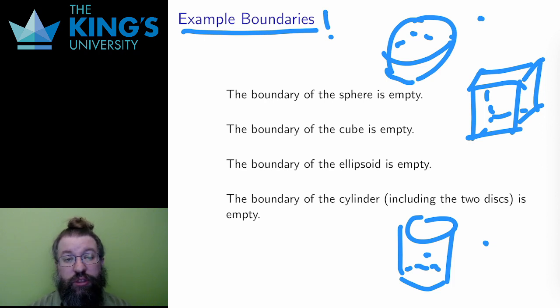If a surface is closed, it has no boundary. There is no edge to the sphere. It just keeps going around. The cube has sharp corners and sharp edges, but it has no edge where it just stops. It only has edges where two faces connect. Closed surfaces, surfaces that contain an inside, have no boundary.